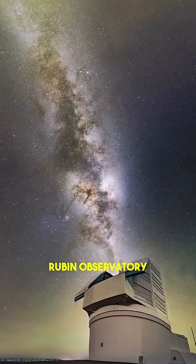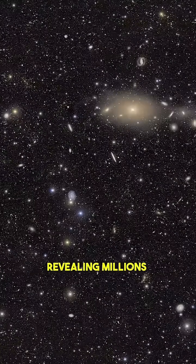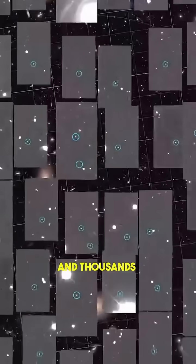The Vera C. Rubin Observatory has just released its first images, revealing millions of galaxies and thousands of asteroids.